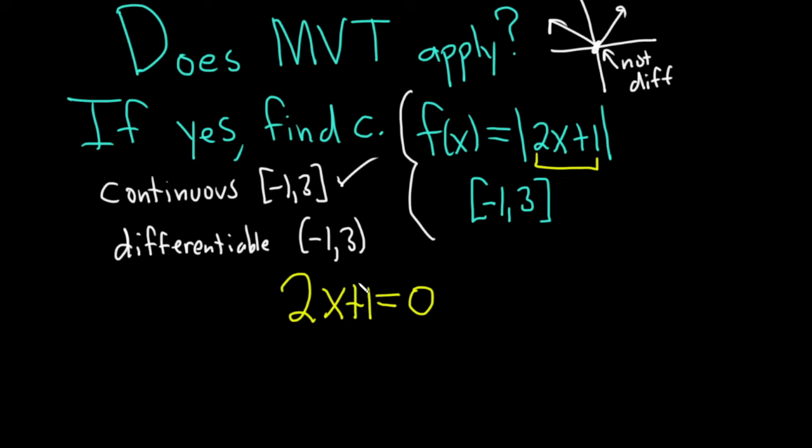We can solve this equation by subtracting 1, so 2x = -1. Then we divide by 2 to get x = -1/2. Now we know it's not differentiable at x = -1/2.